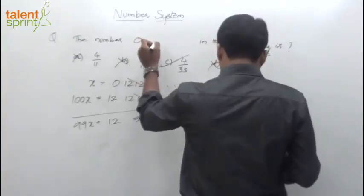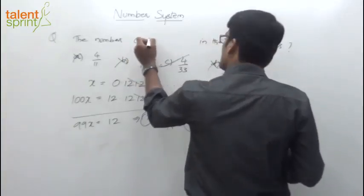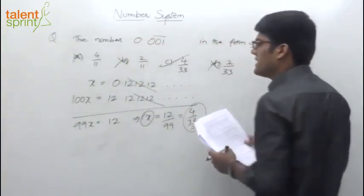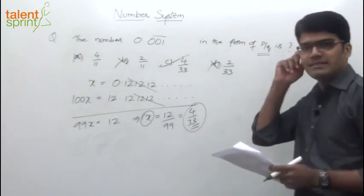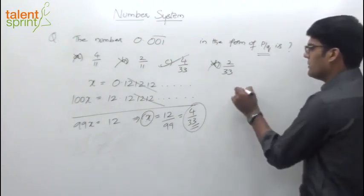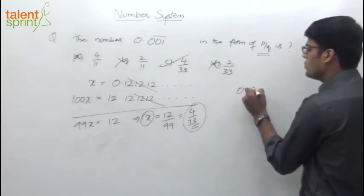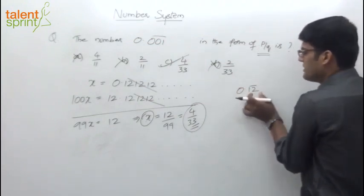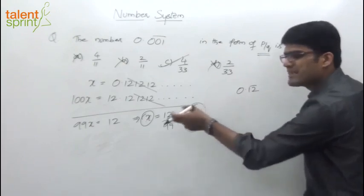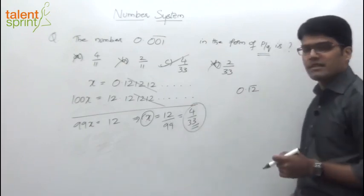Number 0.001 bar. I am sure you understand what bar means. Like 0.121212 can be taken as 0.12 bar, which means whatever is under this bar repeats itself at a regular rate.